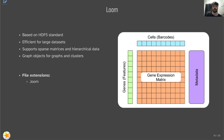Our next format is Loom. Similar to AnnData, this is based on the HDF5 standard. It can store sparse matrices, making it efficient for larger datasets, whereas AnnData stores only full matrices, so file sizes can get quite big for really large data. Loom also supports specific metadata such as graph objects, which are helpful for storing graphs and clusters for downstream analysis. Loom is supported by many different languages — Python, R, C, MATLAB, and others — making it good for general-purpose use if you're transitioning between different tools. The file extension is .loom.